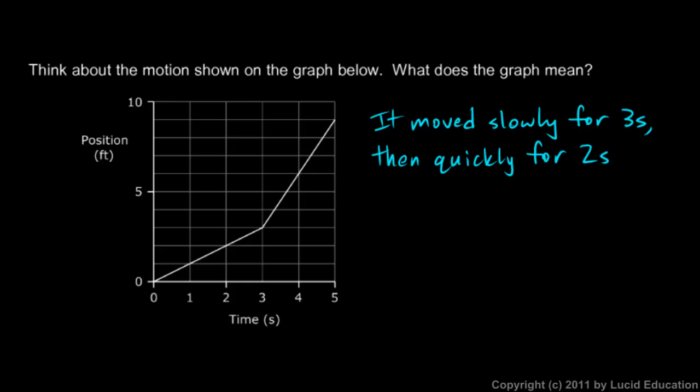Specifically, we can see exactly what happened on the graph. This point (0,0) means that at time zero, it was at position zero. And this point right here means that at time three, it was at position three, because that's a three on my t-axis. So during these three seconds, it went three feet.